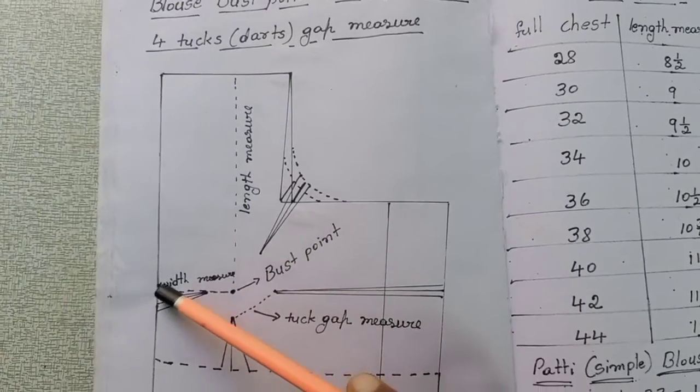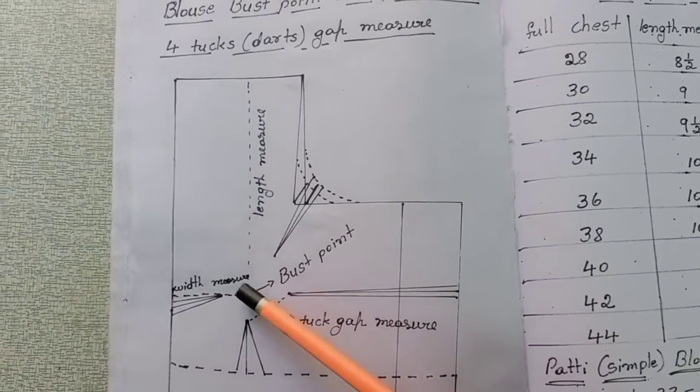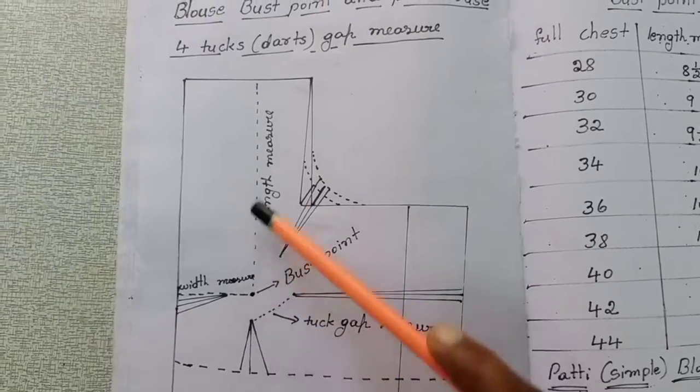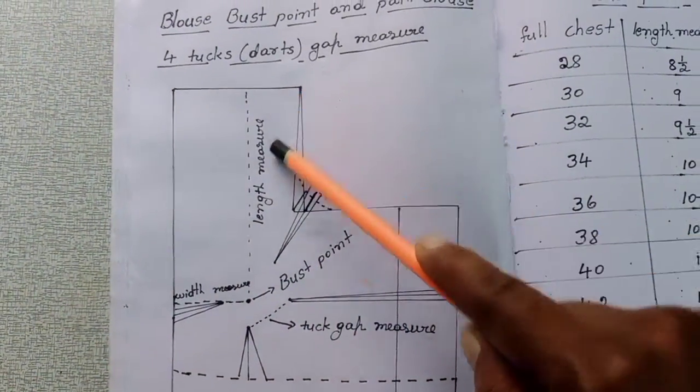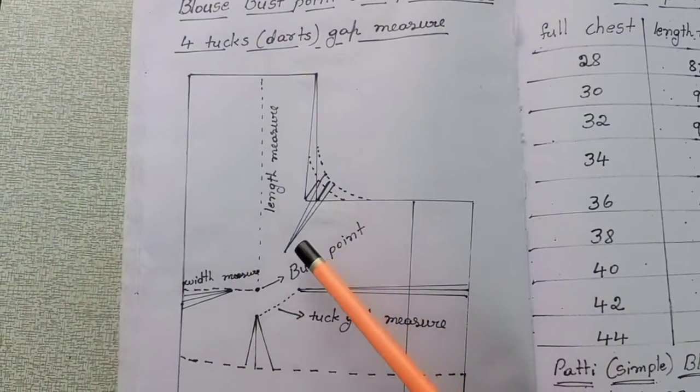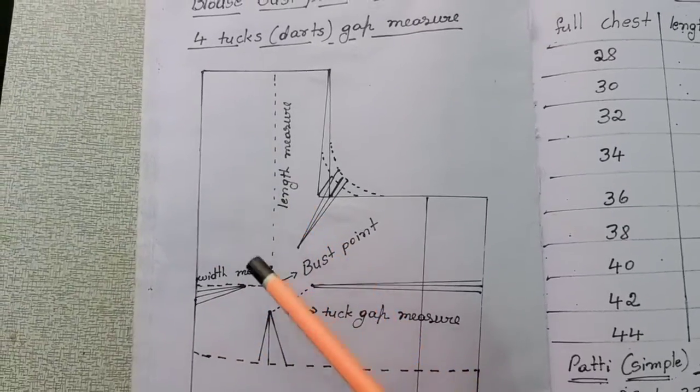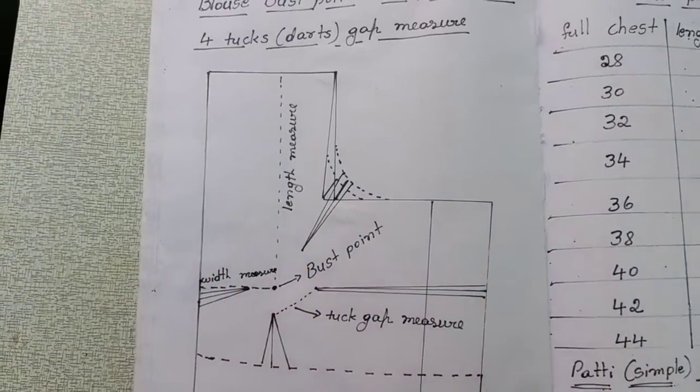So what I have to draw is a width line. This is a width measure, which is very important. I will show you the length and width measure on this chest.